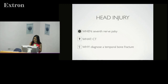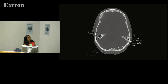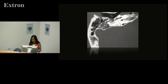Head injury: when a patient presents with head injury and has a 7th nerve palsy, you should request a temporal bone CT to diagnose a temporal bone fracture. Here is a horizontal fracture of the temporal bone showing involvement of the 7th cranial nerve, which you can see very well on mastoid imaging. There is also a vertical fracture involving the vestibular system.